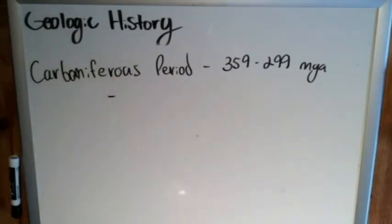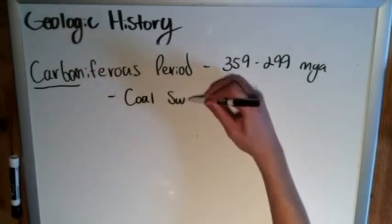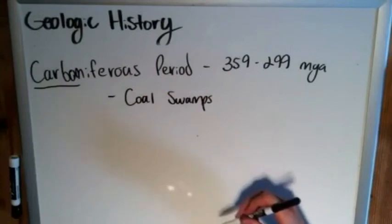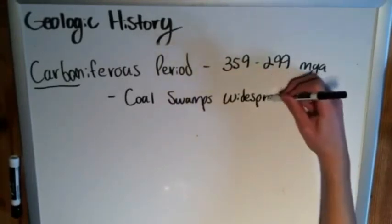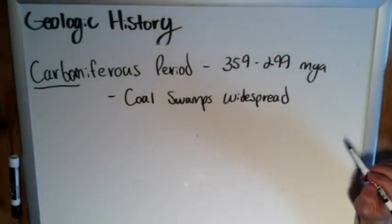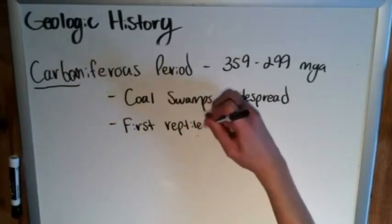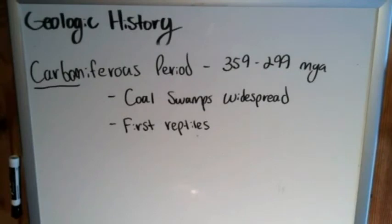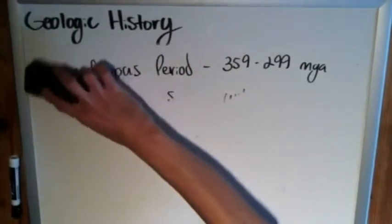The Carboniferous itself — one of the easy ways to remember it is by the name 'carbon,' because one of the big things we had here were widespread coal swamps. Carbon, as you may know, along with sulfur, is a large constituent of coal. The other defining feature of this period is the first reptiles. Those are the two big defining features of the Carboniferous.